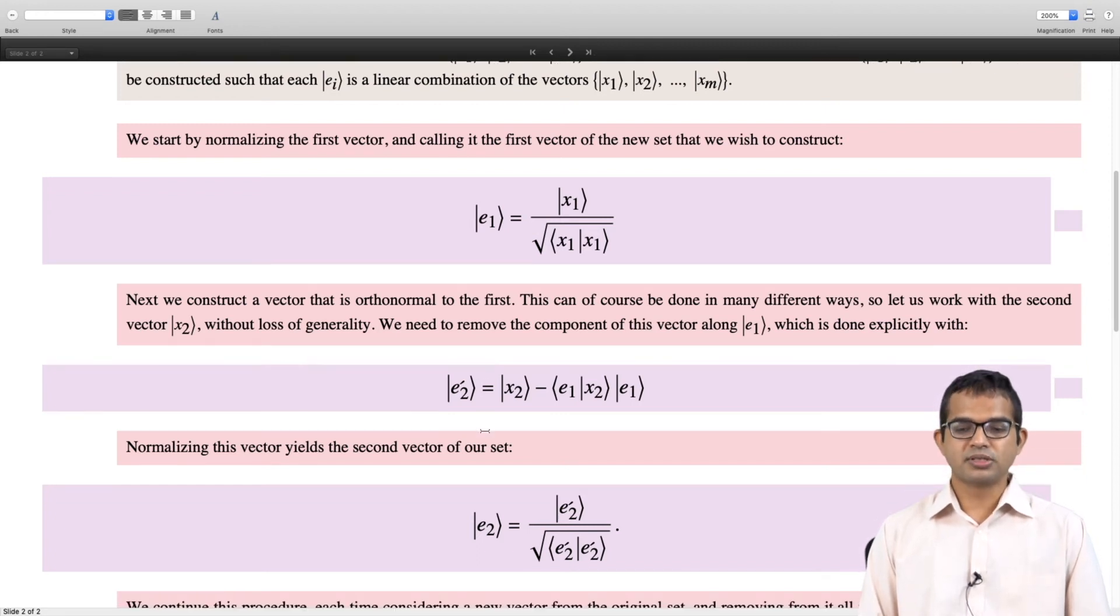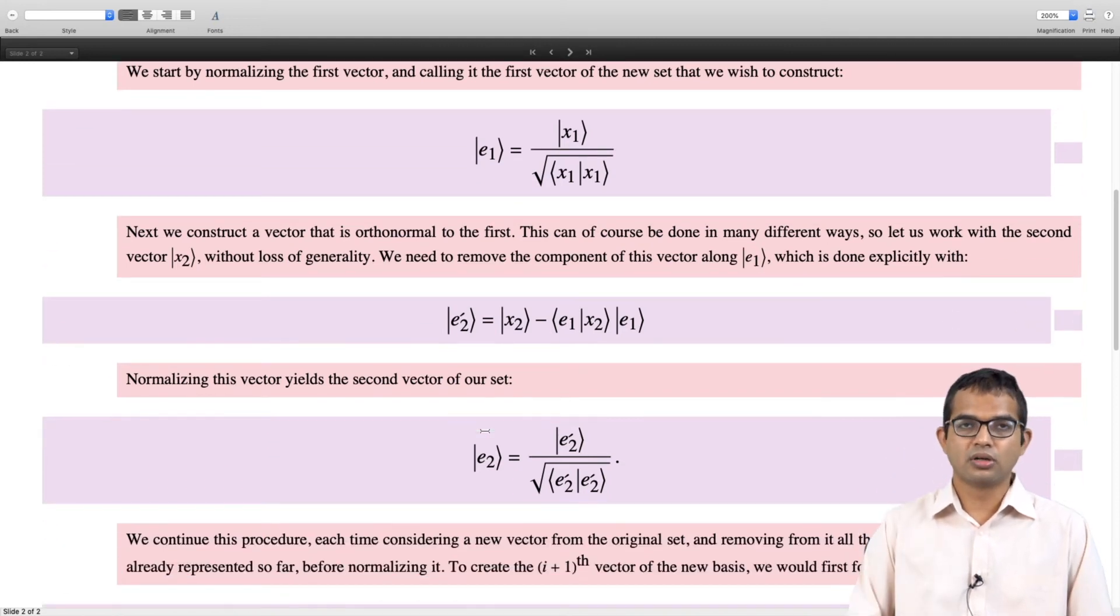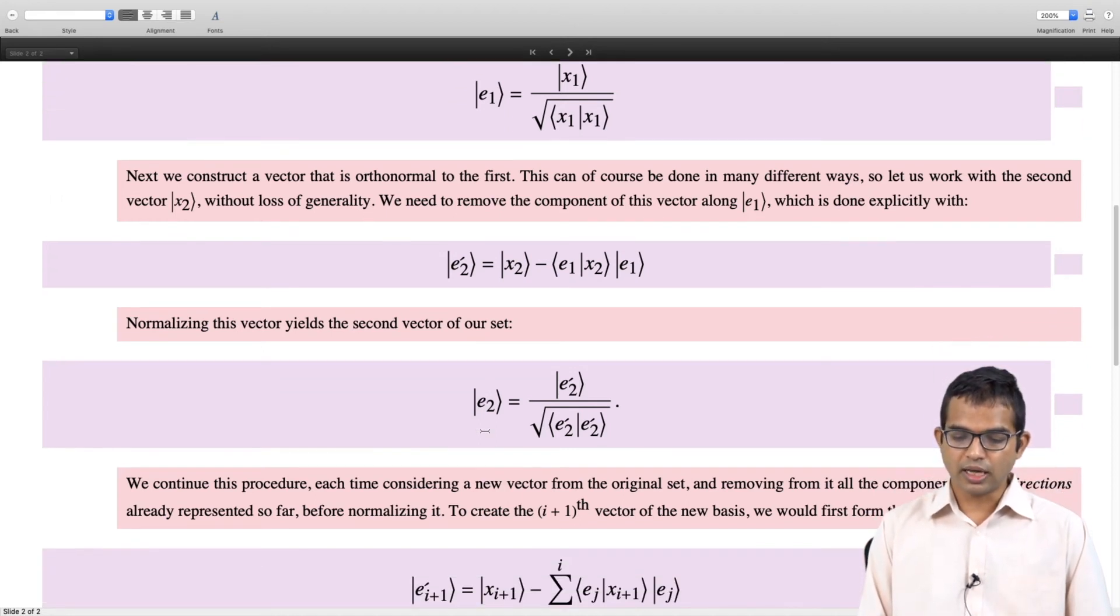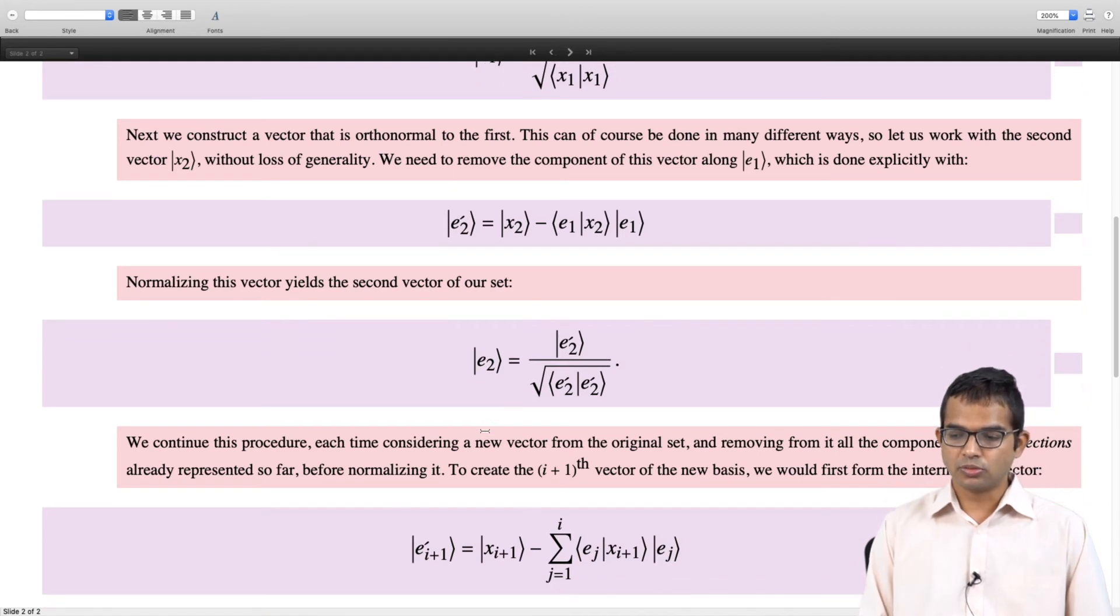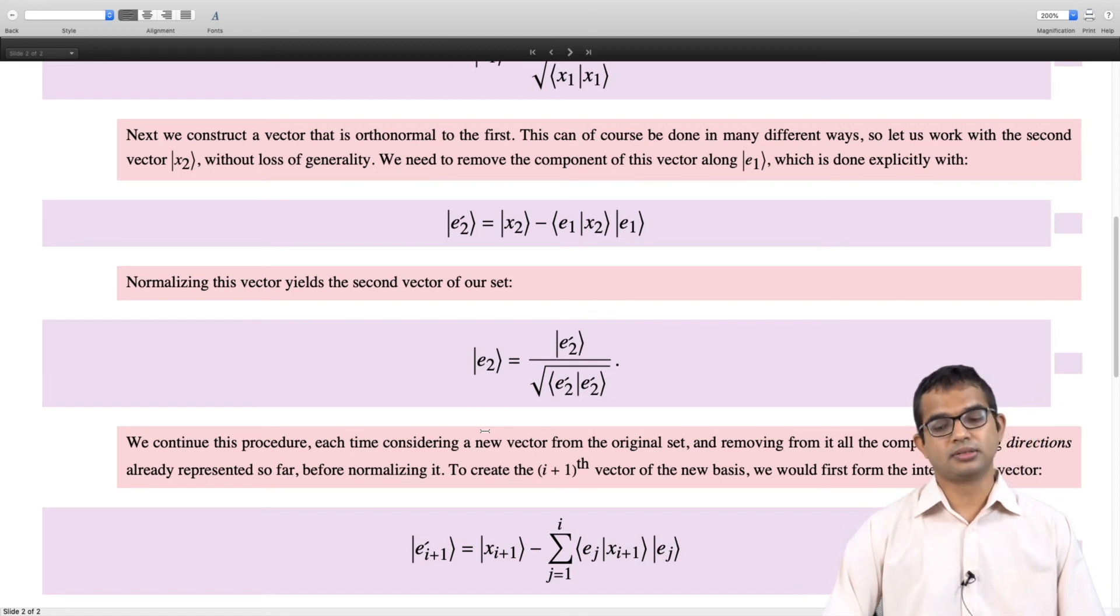The next step is similar. Take the third vector x3 without loss of generality and peel off the component of x3 along x2 and the component of x3 along x1, and normalize it, and so on. You keep on doing this for the ith vector - the i plus 1th vector is obtained by peeling off from the i plus 1th vector components along every vector which has already been put into your box of orthonormal vectors.